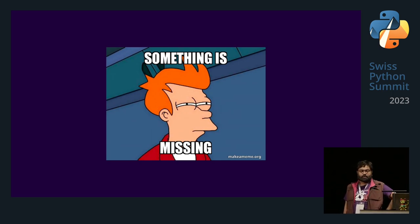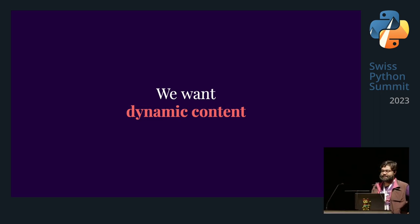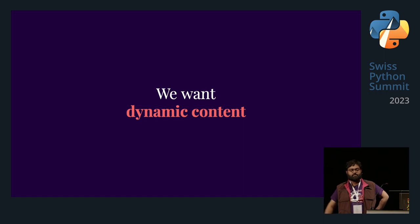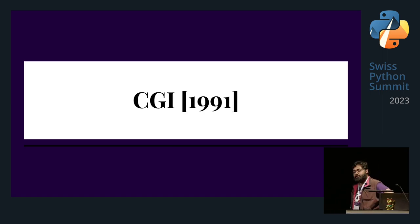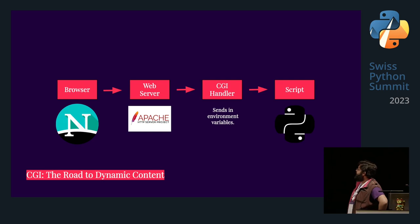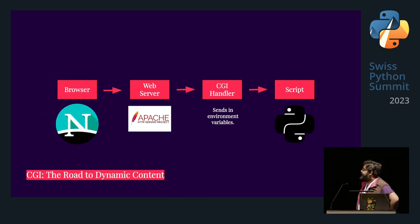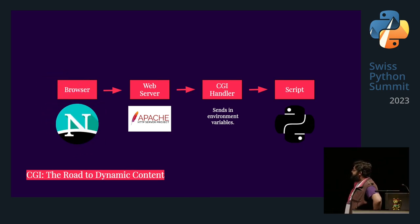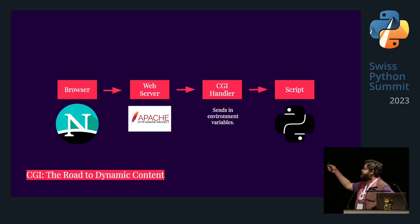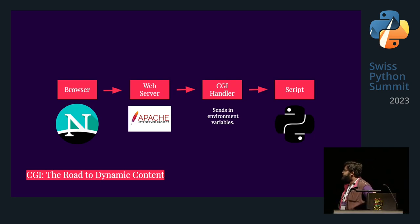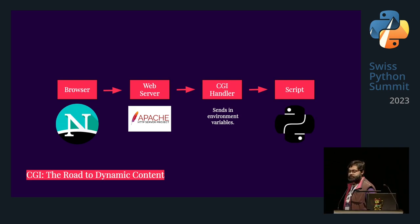So in 1991 we came up with the Common Gateway Interface — CGI, for those in the know. Back then you had something called the Netscape Navigator. A browser sends a request to a web server, the web server sends a request to a CGI handler, which sends over environment variables to a script. In this case I'm using Python as an example, but really most people used Perl — don't tell anybody. The CGI handler at the time was something called ModCGI, and you would fork for every request.